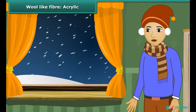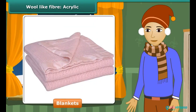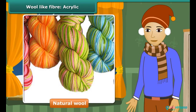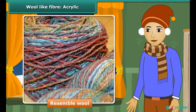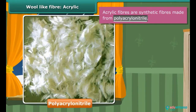To protect us against cold winters, we wear sweaters and shawls and use blankets. Do you know that many of these are actually not made from natural wool, though they appear to resemble wool? These are prepared from acrylic fibers, which are synthetic fibers made from polyacrylonitrile. Acrylic is lightweight, soft and warm with a wool-like feel.